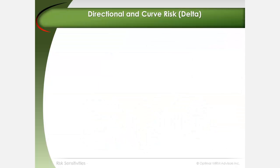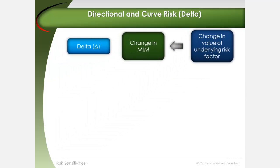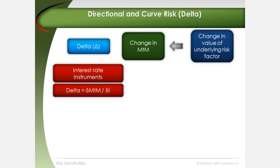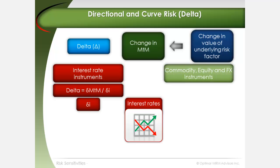Directional delta risk sensitivity represents changes in mark-to-market or P&L as a function of directional changes in interest rates or percentage price changes in equity, commodity, and foreign exchange markets. For interest rate instruments, delta equals the change in mark-to-market divided by the change in price, and delta P represents the percentage price changes in underlying equity, commodity, and FX prices.